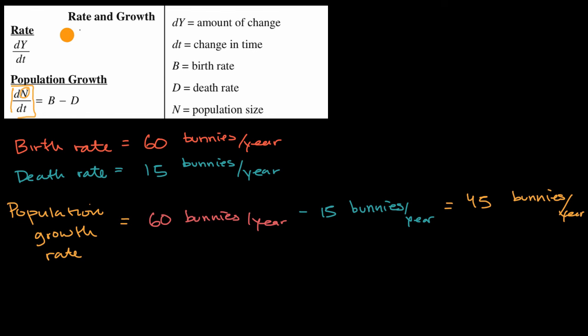There's other ways you could have written that. If you didn't want to use calculus notation, you could have written change in population for a given change in time. The Greek letter delta often denotes change in. And what this formula says is exactly what we did.